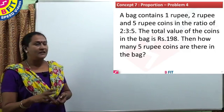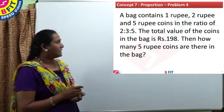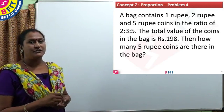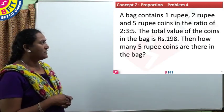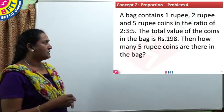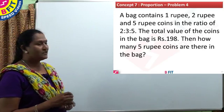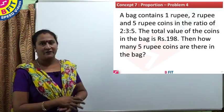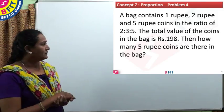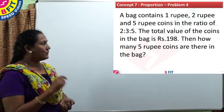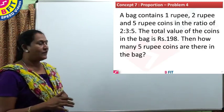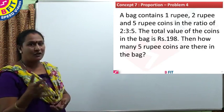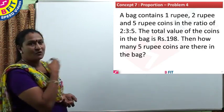Now a practical example using proportions. A bag contains 1 rupee, 2 rupee, and 5 rupee coins in the ratio 2:3:5. The total value of these coins in the bag is ₹198. How many 5 rupee coins are there? Note: ₹198 is the total value of the coins, not the total number of coins — so you cannot simply divide 198 by the sum of the ratios.